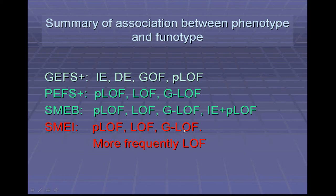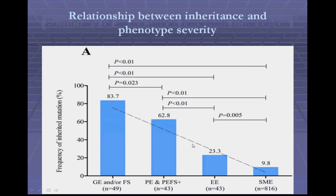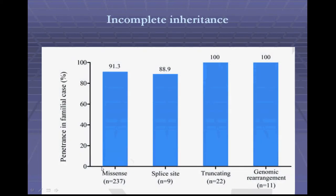It is found that there is a negative correlation between familial instances and phenotype severity, and incomplete penetrance was associated with missense and splice site mutations, but not truncations or genomic rearrangements, which has clinical genetic application concerns. From the data presented, we might find that SCN1A mutations vary in pathogenicity, which correlates with phenotype severity and inheritance.